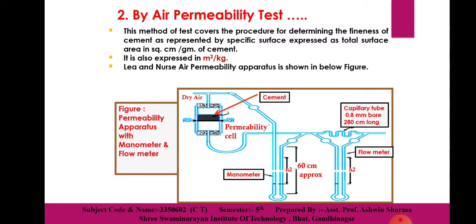This method of test covers the procedure for determining the fineness of cement as represented by specific surface, expressed as total square centimeters per gram of cement. Fineness of cement can also be expressed as meter squared per kilogram.